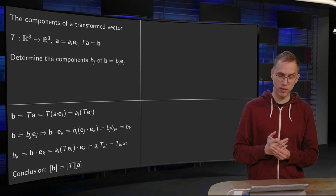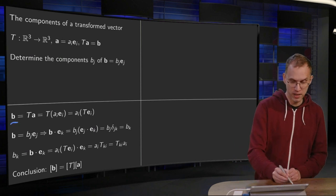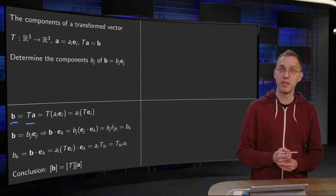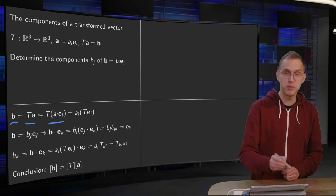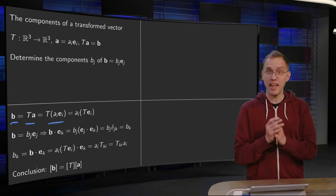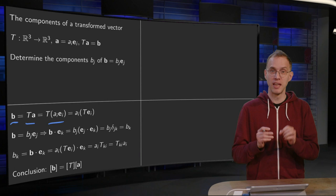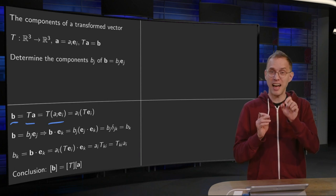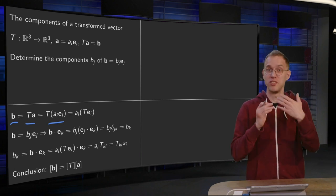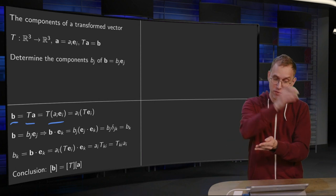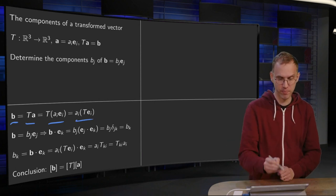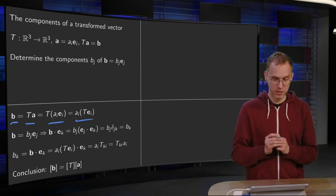Now we use the following trick. We know B is the image of A, then we can expand A in the standard basis. Then these Ai's are just scalars, and we know that T is linear, so we can take the scalars in front. That's what we do over here. That's the first part.